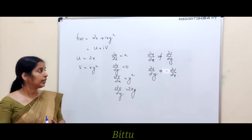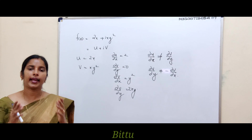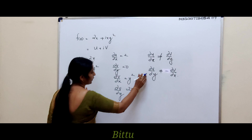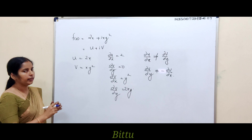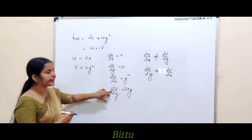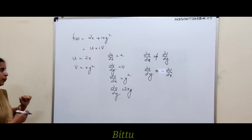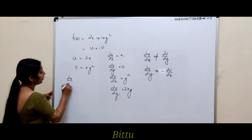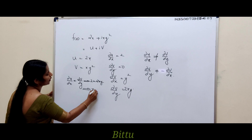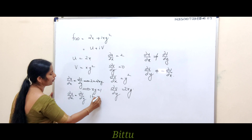However, there is a possibility that the CR equations hold at specific points, so we must analyze that situation carefully. Setting ∂u/∂x = ∂v/∂y gives 2 = 2xy, which implies xy = 1. So ∂u/∂x = ∂v/∂y only if xy = 1.